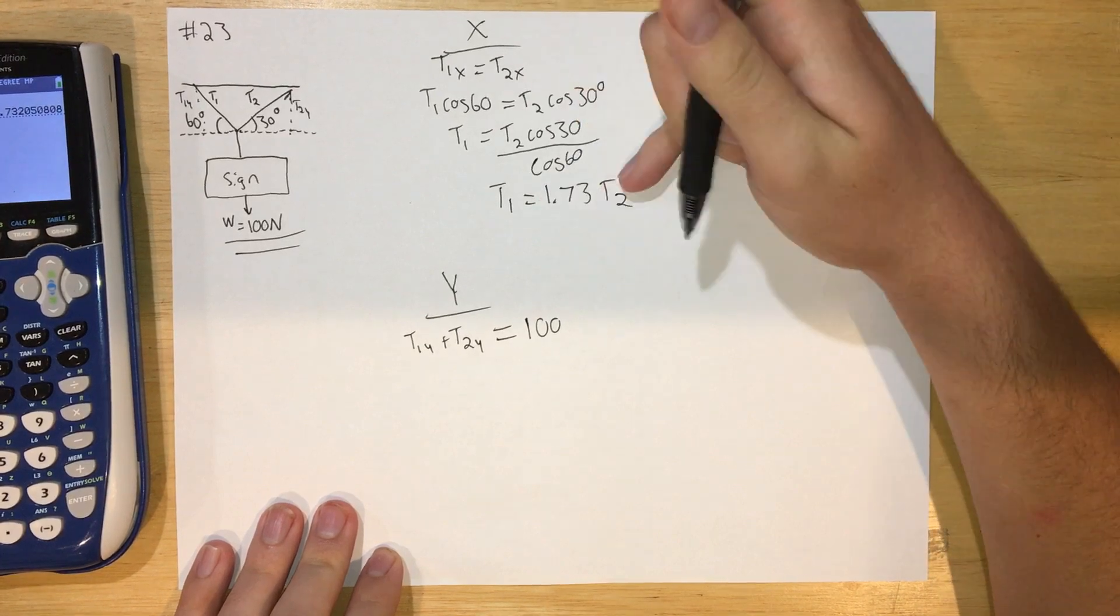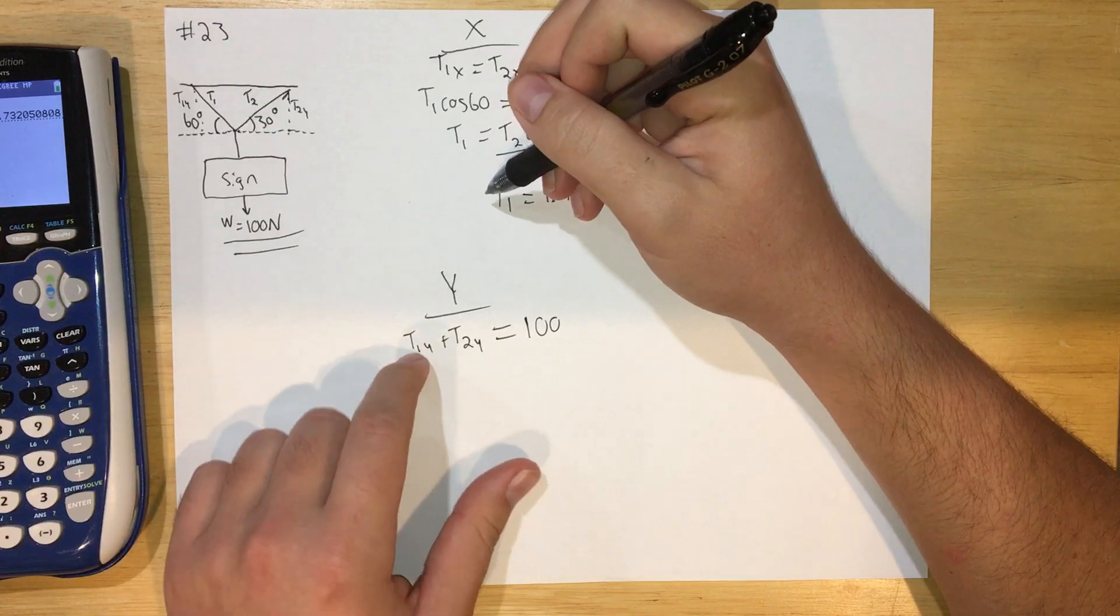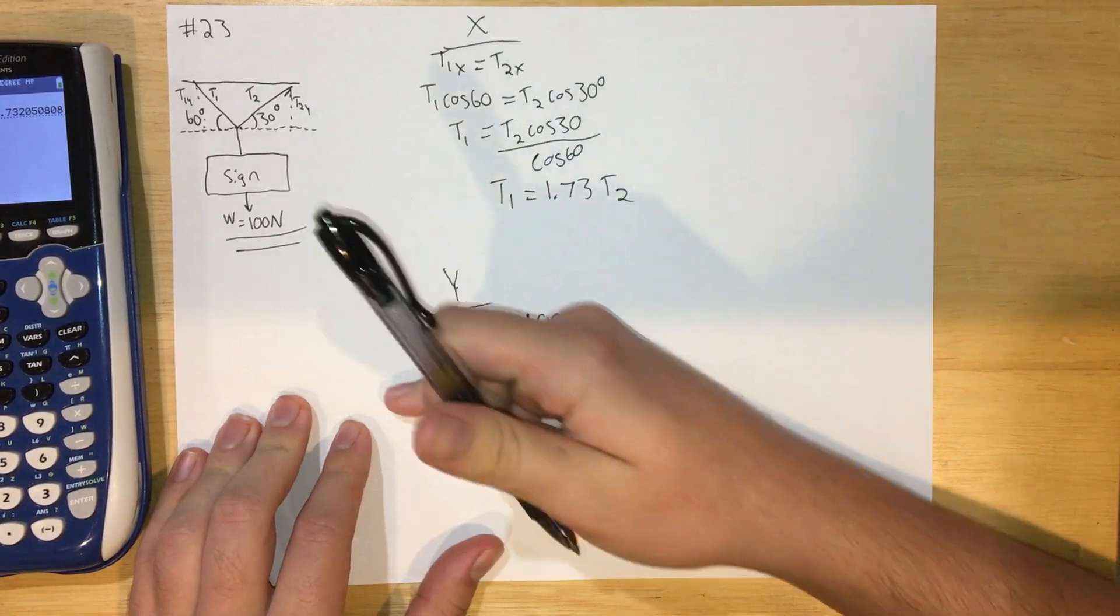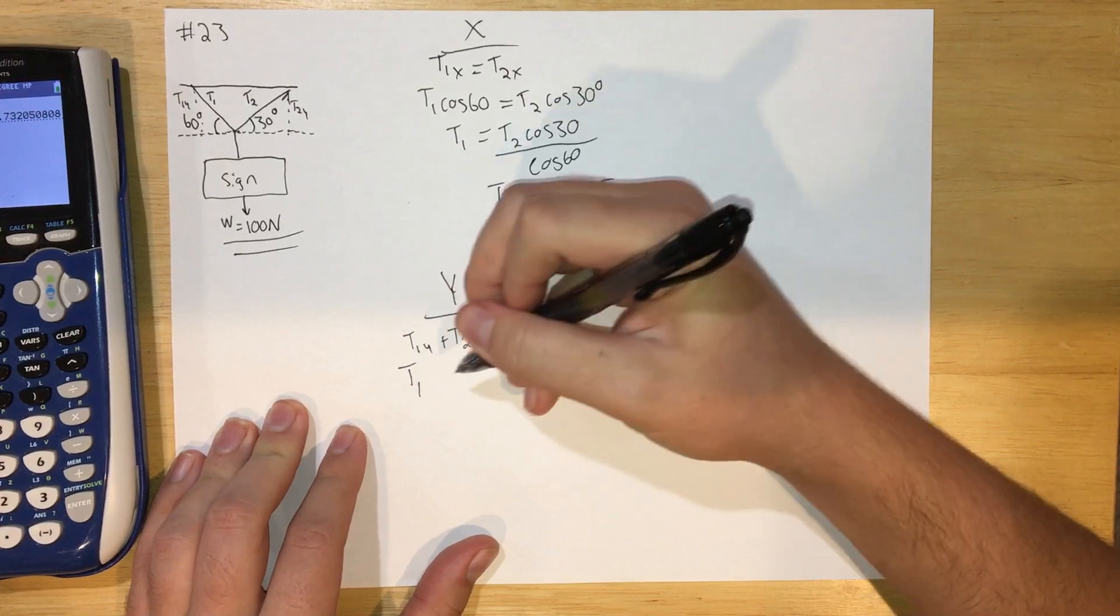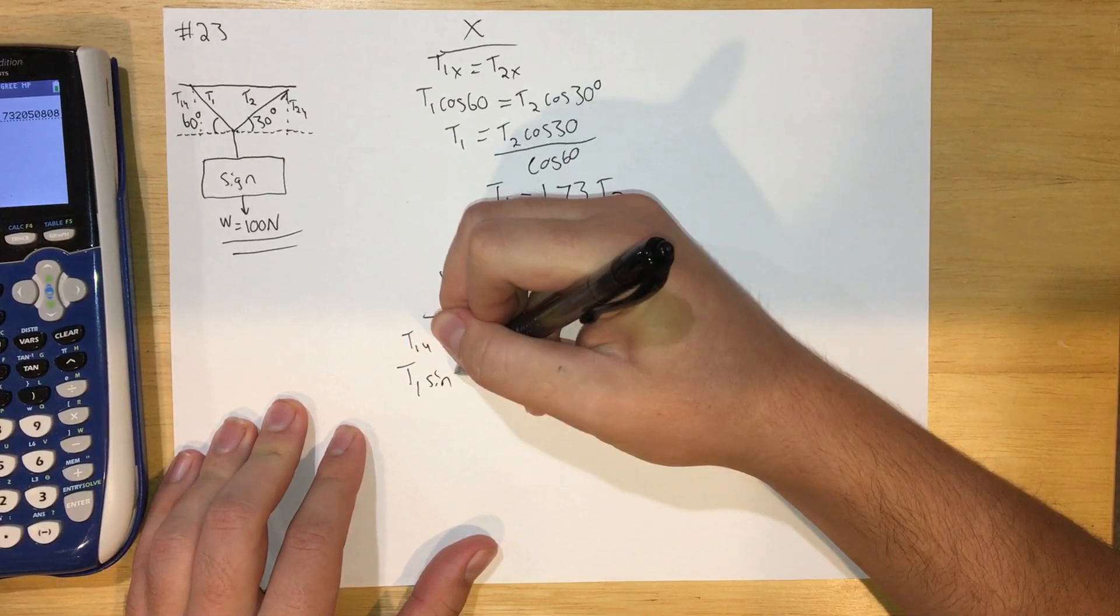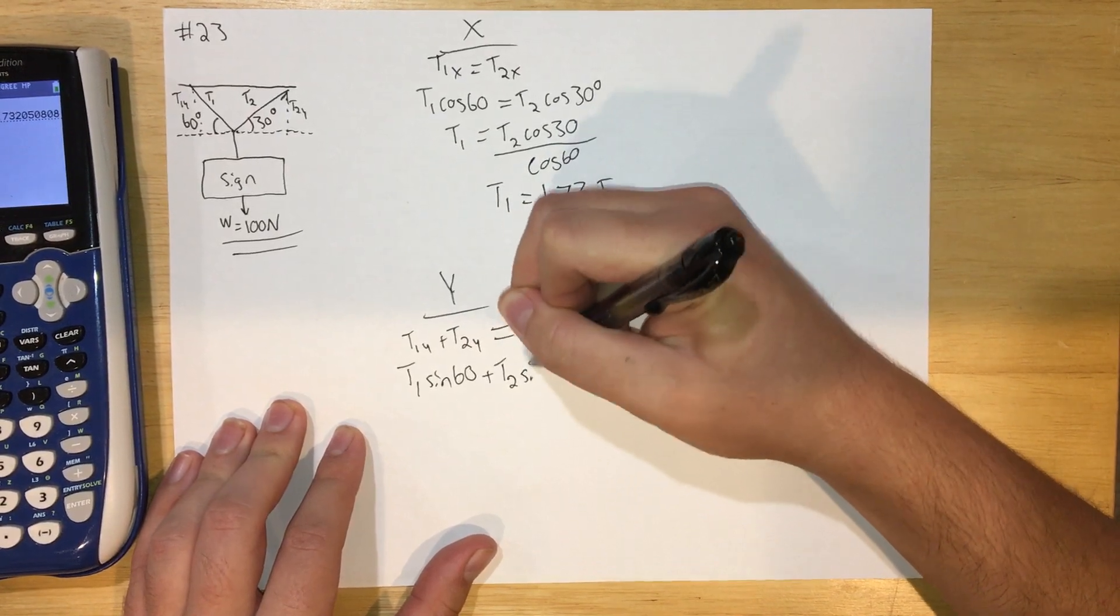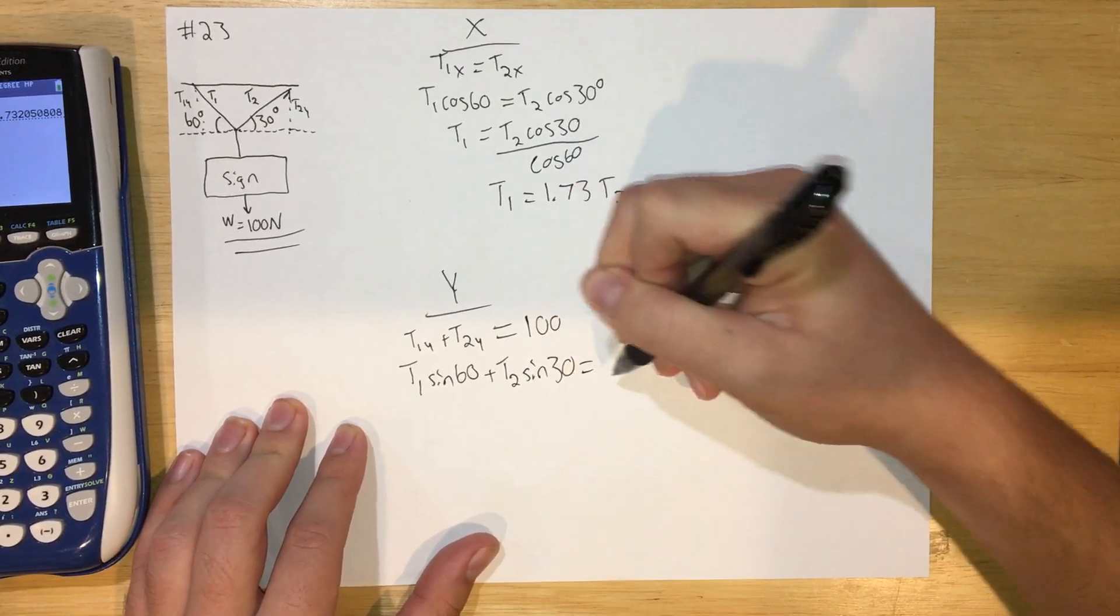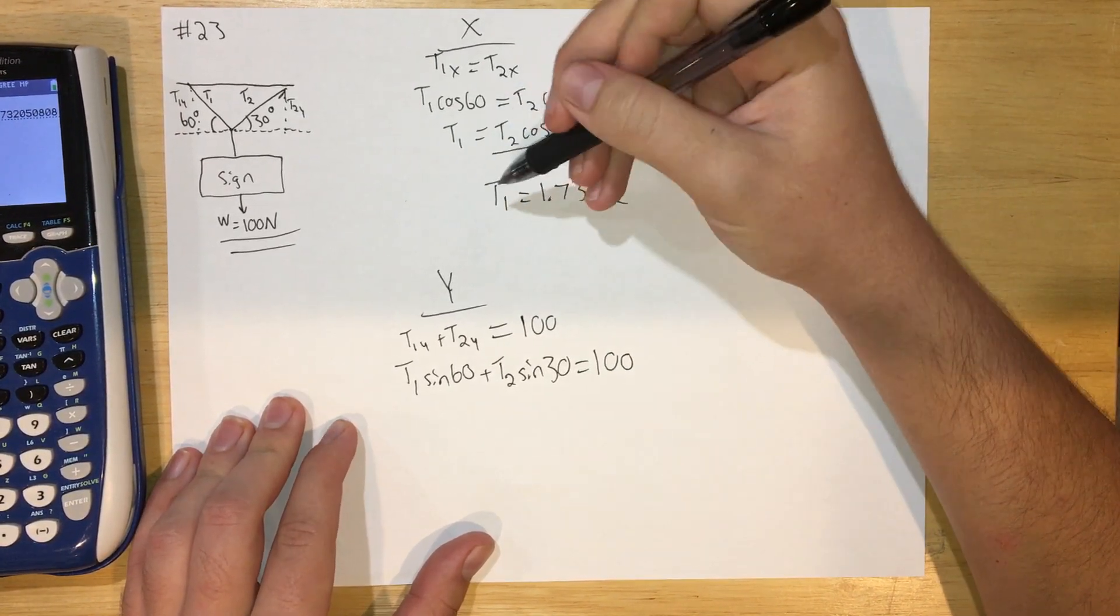Now that I have this T1 equals 1.73 T2, I can plug this in over here. First let me write another line here. Since this is the Y component, this is going to be T1 sine of the angle and this is going to be T2 sine of its angle.